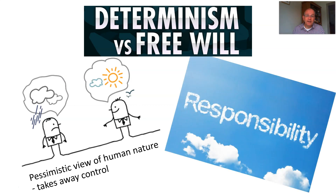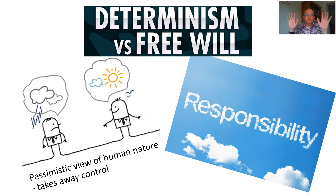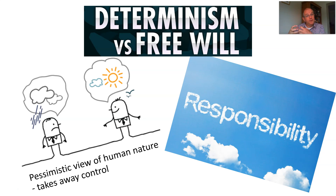Also consider responsibility. If it's deterministic and you work really hard for a psychology test and get a great mark, that was just your biology and environment. Or can you say, 'No, I determined that — I had some self-determination, I made a choice, and I want to take responsibility for my high mark'? Likewise, with a low mark, determinism says you couldn't have chosen any other way. Whereas free will says you should be held accountable. So determinism is pessimistic and doesn't allow you to take responsibility, while free will is optimistic and enables responsibility.